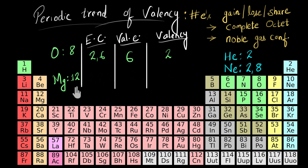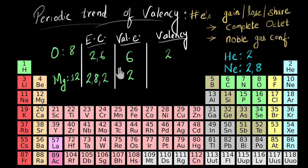Now let's talk about magnesium. Magnesium has 12 electrons and its electronic configuration is 2,8,2. So it has two valence electrons. If magnesium loses two electrons, its configuration will be 2,8 — just like neon. Or if it gains six electrons, its configuration will be 2,8,8 — just like the noble gas argon. It's always easier to gain or lose fewer electrons, so it'll be easier for magnesium to lose two electrons rather than gain six. So its valency will be two.